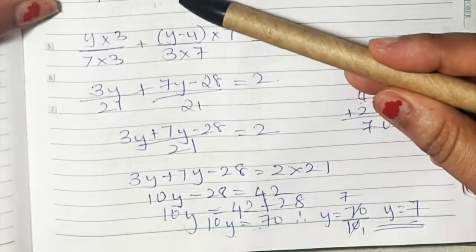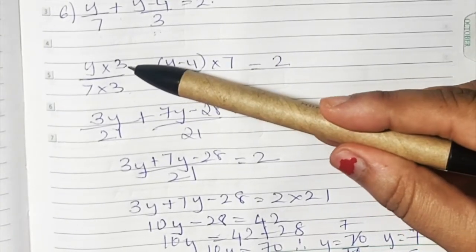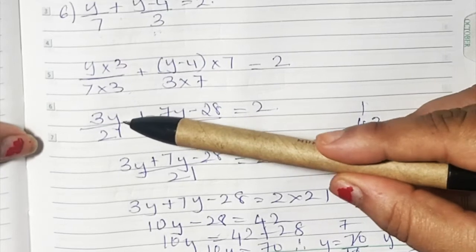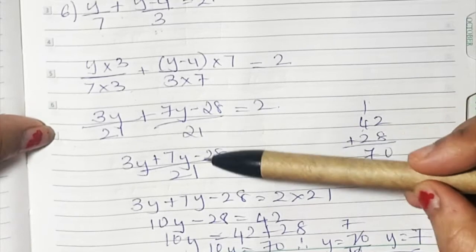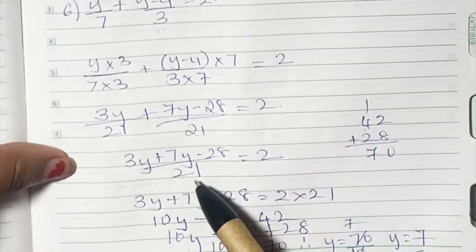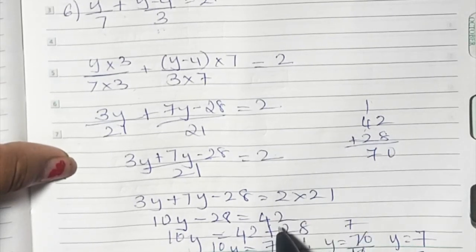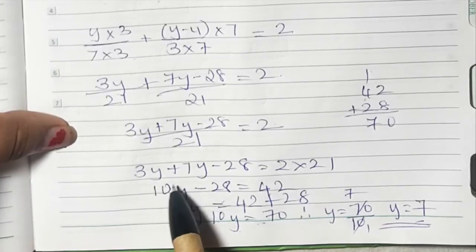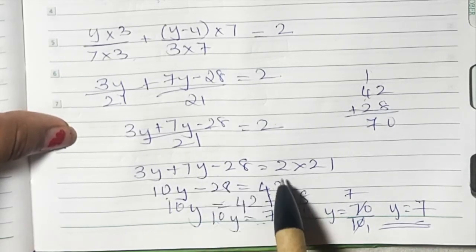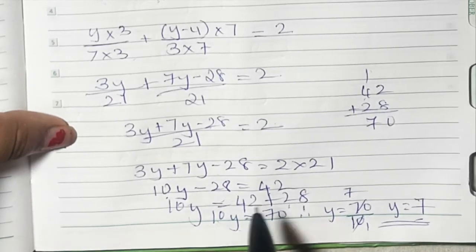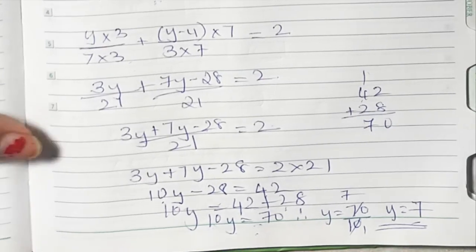To recap: we took the LCM, used 7 into 3 and 3 into 7 as denominators, and multiplied the same on top. That gives 3y plus 7y minus 28 upon 21. The 21 crosses over and becomes multiplied — 21 into 2 is 42. Then minus 28 goes to the other side, giving 10y equals 70. So y equals 70 upon 10, and the value of y is 7.